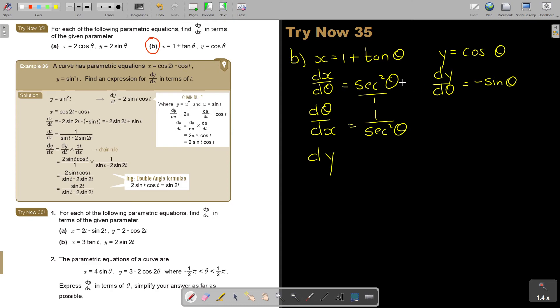You can see it. If you multiply this one with this one, you will see that the theta's will cancel out. And it's dy over dx. And that's going to be negative sin theta over sec squared theta.